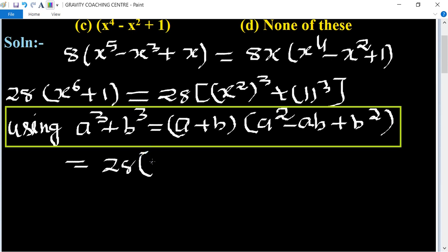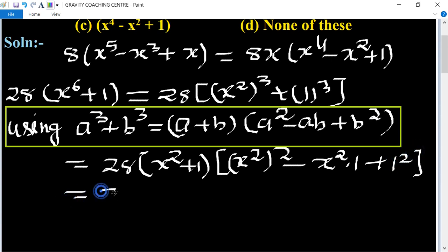...times (x^2 + 1) times [(x^2)^2 - x^2(1) + 1^2], which equals 28(x^2 + 1)(x^4 - x^2 + 1).